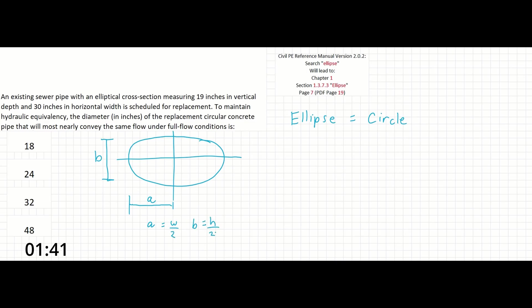All we have to do now is plug in the equation of the ellipse equal to the equation of the circle and solve. So π times a times b equals—if you need the equation of a circle, it's right underneath section 1.3.7.3 in 1.3.7.4—it's πd² over 4.